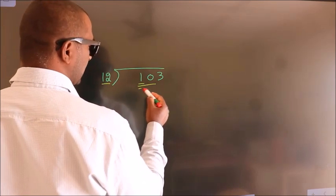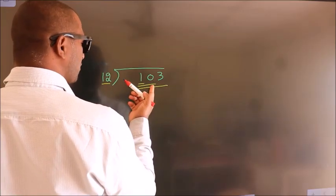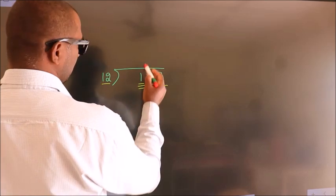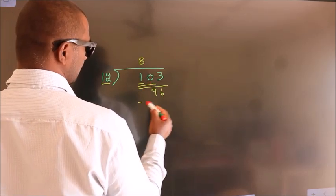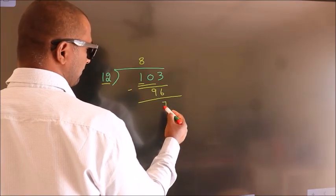So we should take 3 numbers, 1, 0, 3. A number close to 103 in the 12 table is 12 times 8, which is 96. Now we should subtract, we get 7.